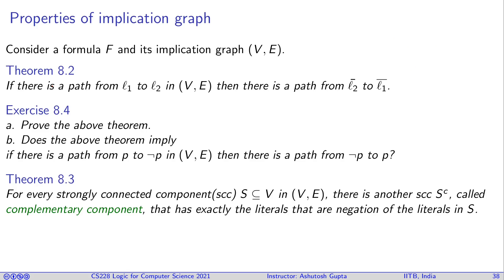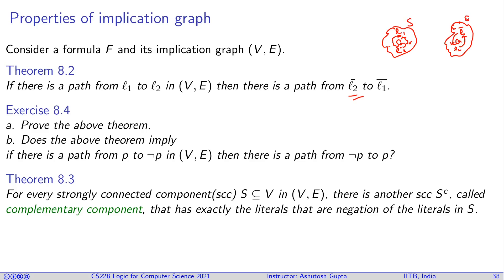Now consider strongly connected components (SCCs). If S is an SCC in the implication graph, there is a complementary SCC containing exactly the negations of the literals in S. Because if L1 and L2 are in S, there are paths between them, and by the path-negation property their negations ¬L1 and ¬L2 form a cycle too — giving another SCC.